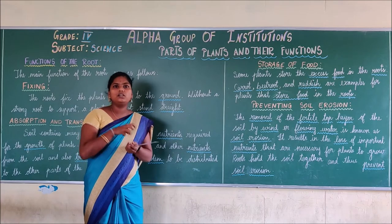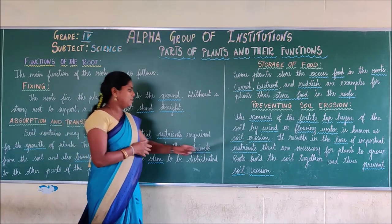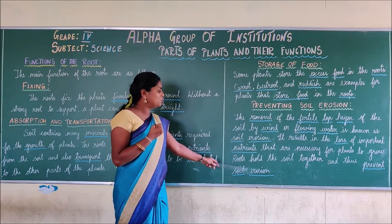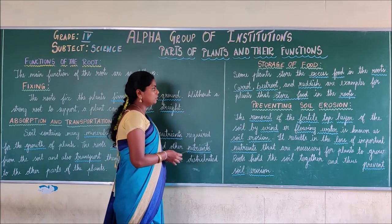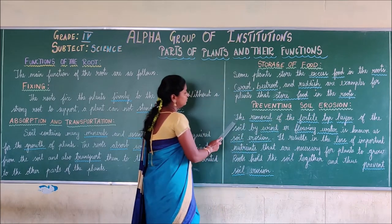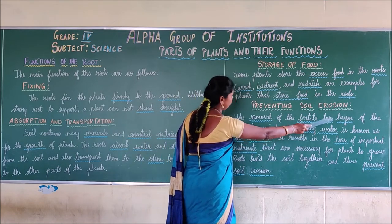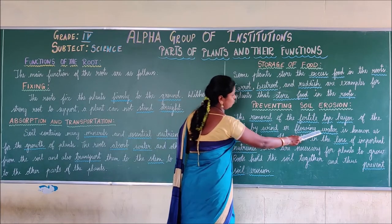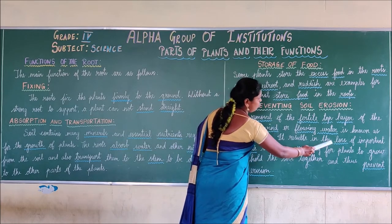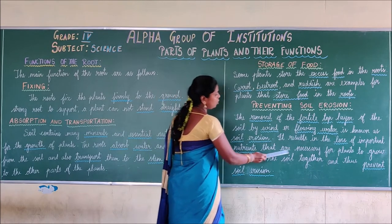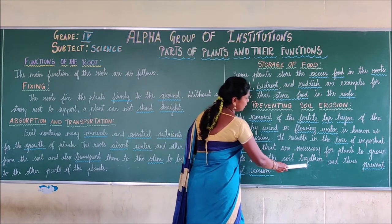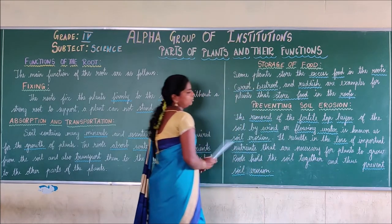The root holds the soil and won't allow it to go away. The root holds the nutrients and minerals in place. That is why there won't be any soil erosion. The removal of the fertile top layer of the soil by wind or flowing water is known as soil erosion. It results in the loss of important nutrients necessary for plants to grow. Roots hold the soil together and thus prevent soil erosion.